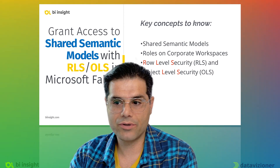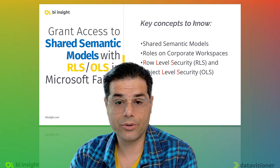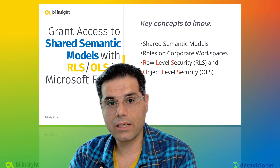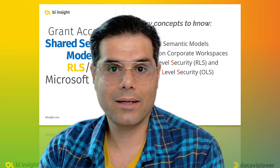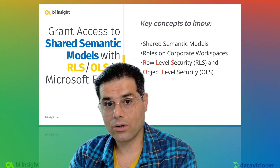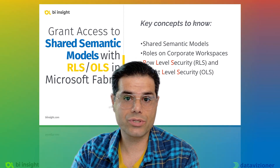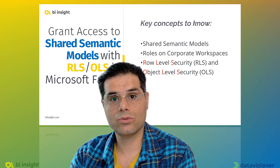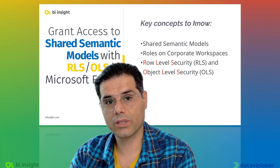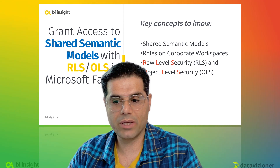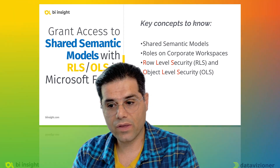The third concept is understanding row-level security and object level security. This is a vast topic and we won't cover all ins and outs here, but the key point is that RLS and OLS are implemented in semantic models by the developers. They create rules applied to users after the semantic model is published. Best practice is to use security groups rather than individuals.